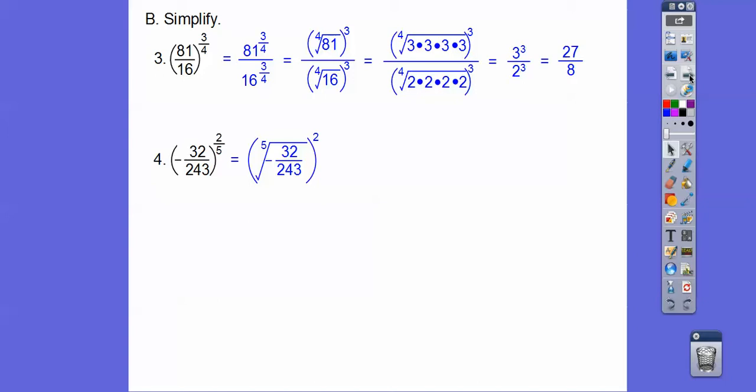So the fifth root of negative 32 over 243. Now since this is an odd number, I can do negatives inside the radical. It just comes outside as a negative on the outside. So that's all I did. And then 32 is 2, 2, 2, 2, 2, with one more 2, sorry. 243 is 5 threes right there, so this is just going to be 2 thirds right there. Don't forget the negative right there.